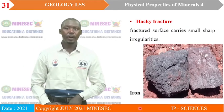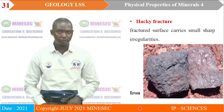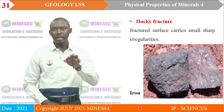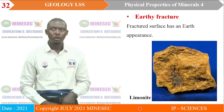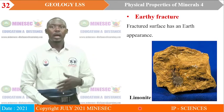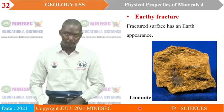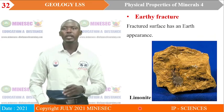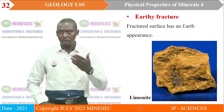Hackly fracture: the mineral breaks leaving behind sharp irregularities on the surface, clearly exemplified by cast iron — small sharp surfaces left behind as the mineral breaks. We have earthy fracture, where the surface of the mineral has the appearance of earth or resembles earth when it breaks. An example is limonite. These are the examples of fractures and their descriptions.